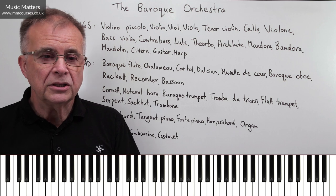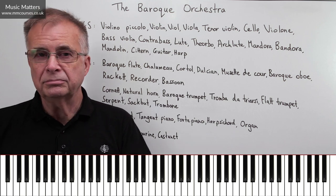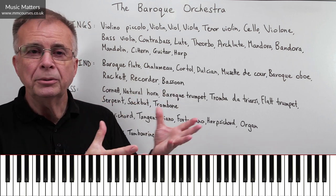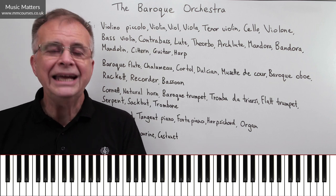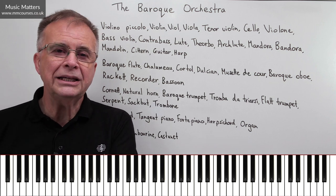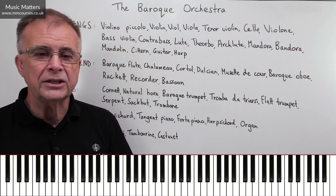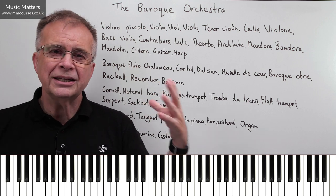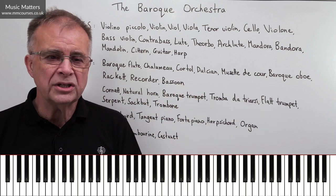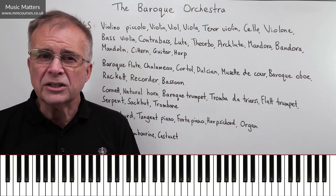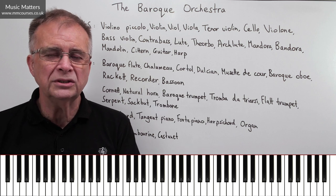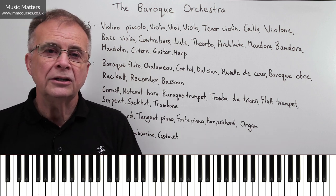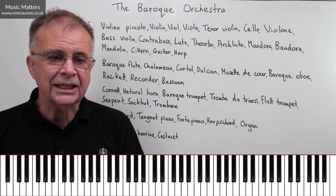Bach, going back to the Baroque — a famous Baroque composer — had an orchestra of 18 players when he was working in a place called Curtin. So there's a kind of standard orchestra size of 18 players. Quite a small orchestra in terms of what you might see today.